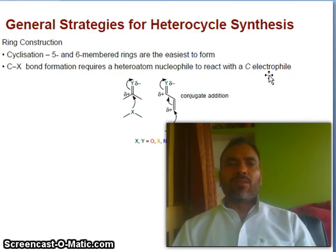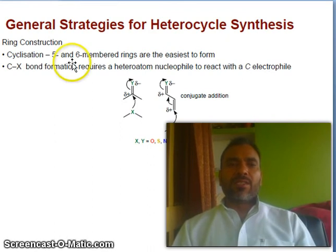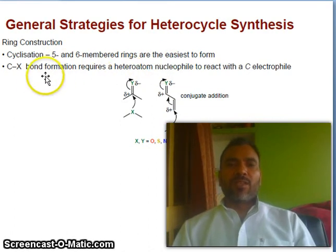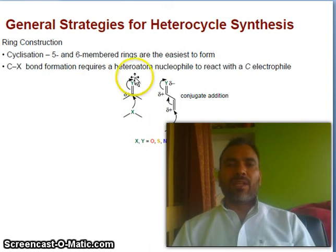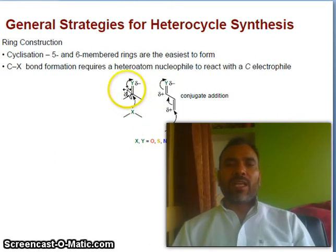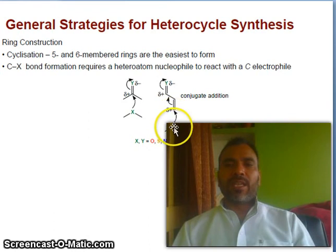Now we will discuss about general strategies for heterocyclic synthesis. Construction of rings — cyclizations. Five- and six-membered rings are the easiest to form. C–X bond formation requires a heteroatom nucleophile to react with carbon electrophiles. You can see this is the center — delta positive — and the nucleophile attacks on this and this bond will shift onto X. Or conjugate addition: if you have a conjugated system, it will not directly attack on this center, it will attack on the alkene end.